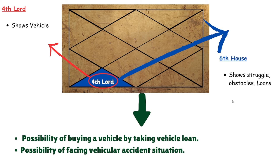The fourth lord shows vehicles and the sixth house shows struggles, obstacles, and loans. There is a possibility that you might purchase a vehicle with the help of a vehicle loan. You also need to be cautious while driving, as there is a chance of getting into a car or vehicle accident, especially during the running time period of this respective lord.